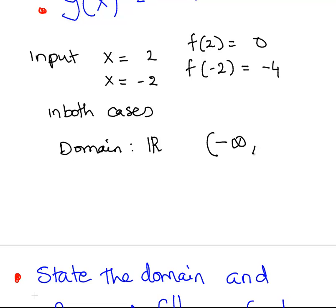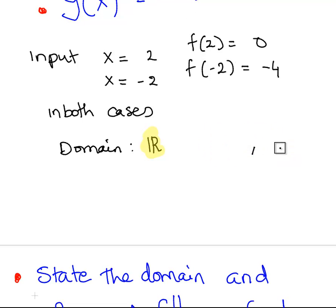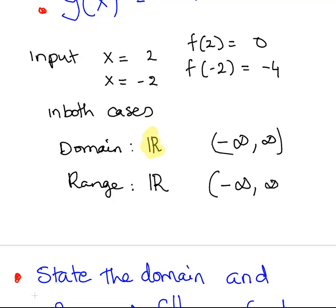If you are familiar with interval notation, the domain is any number between minus infinity and infinity. The round bracket signifies non-inclusive, and we always use that beside infinity or minus infinity. The range is also the same — all possible real numbers, minus infinity to infinity. So that is for both cases. Straightforward enough to start off with.